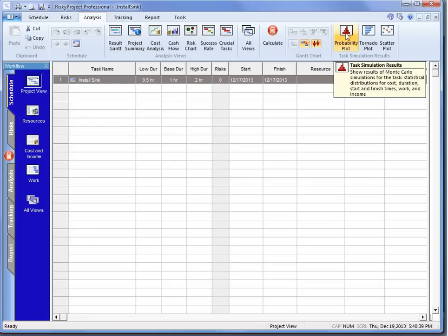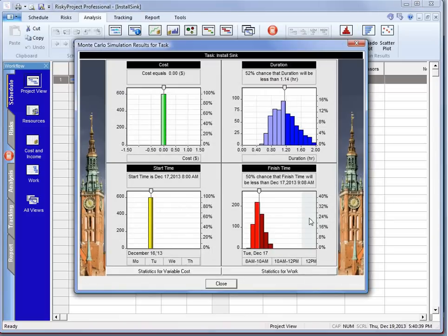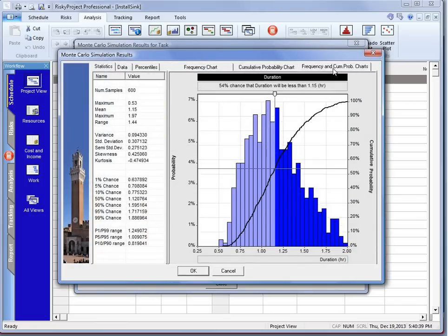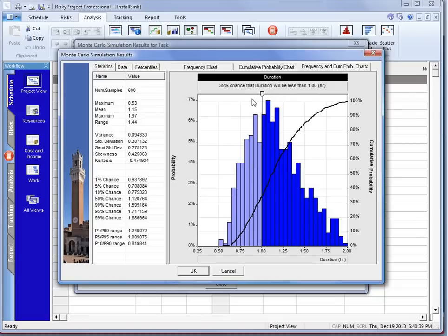And one of the things that we'll see is we can go and find the probability. And these are the charts that we get out of this. This is the key one, especially when we're looking at duration rather than finish times. What we can see is that if my original estimate, let's say it was an hour, was the most likely, I can see I only have a 35% chance. Because of the nature of the triangular distribution, we can see I only have a 35% chance if I met that.